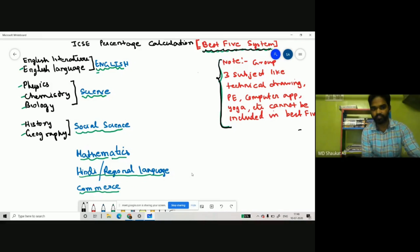First thing to notice: English is your compulsory subject which you have to include in best five, plus four subjects where you get your best marks. Then you find the average.